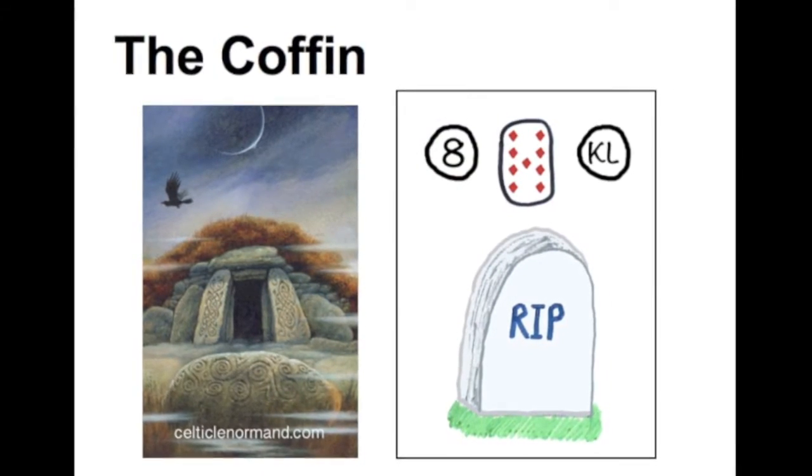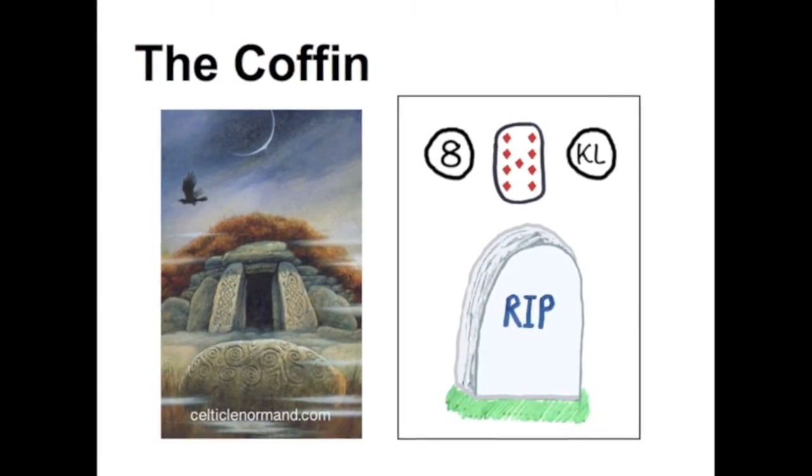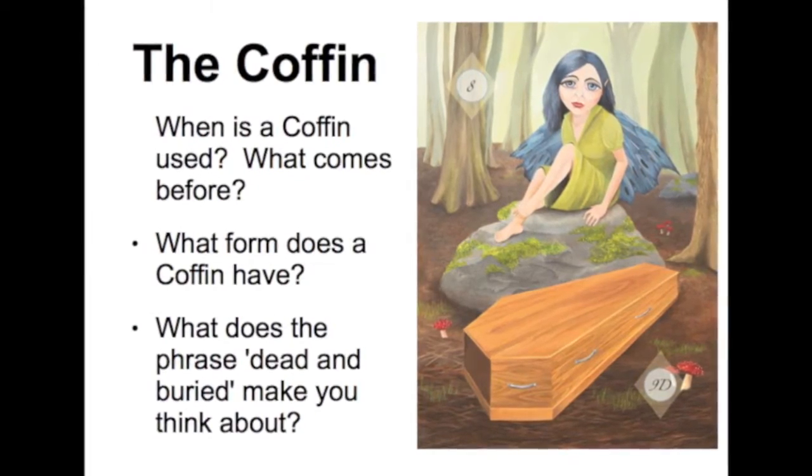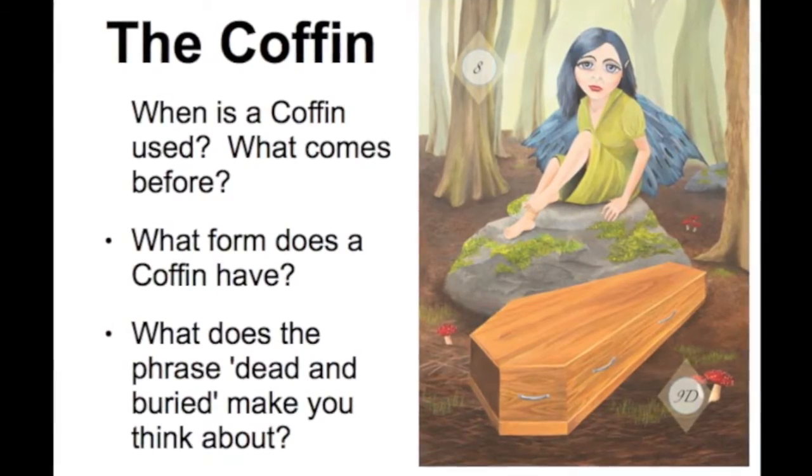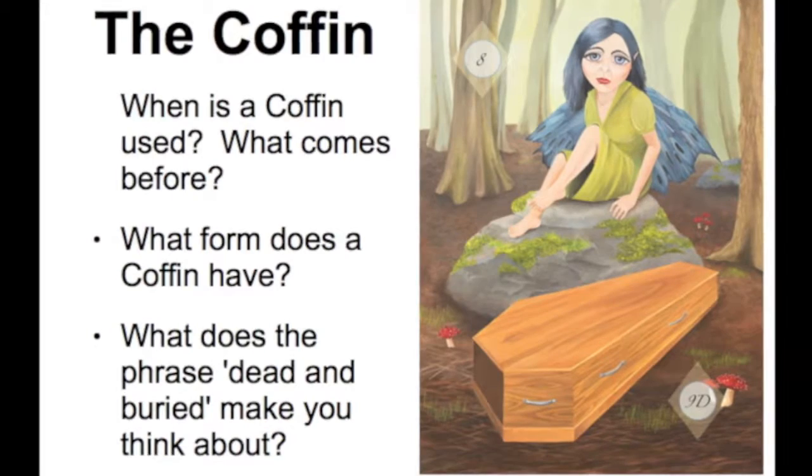If we look at some images of the coffin — here from the Celtic Lenormand, then the Kindergarten Lenormand, and then the Wings of Change Lenormand — we have the questions: when is a coffin used? What comes before? What form does a coffin have? And what does the phrase 'dead and buried' make you think about? A coffin is used when somebody has died. And when we think about what went before, there can quite often be an association with a long-term sickness that led up to this death. The coffin is associated with both of those things — it can be quite literally a card of death, and also a card of chronic, ongoing, long-lasting sickness and general ill health.